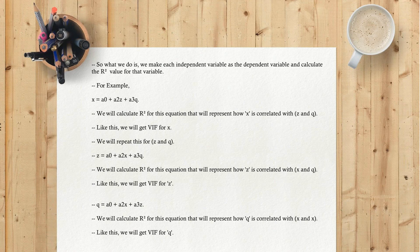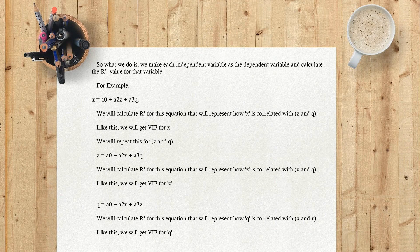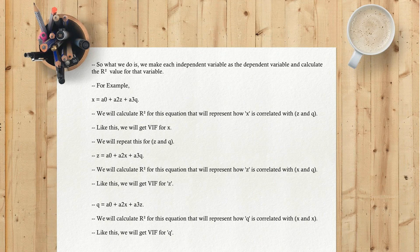To calculate R-squared for independent variables, we make each independent variable the dependent variable and calculate its R-squared. For example: X equals A0 plus A2Z plus A3Q — this R-squared represents how X is correlated with Z and Q, giving us VIF for X. Similarly, Z equals A0 plus A2X plus A3Q gives VIF for Z. And Q equals A0 plus A2X plus A3Z gives VIF for Q.